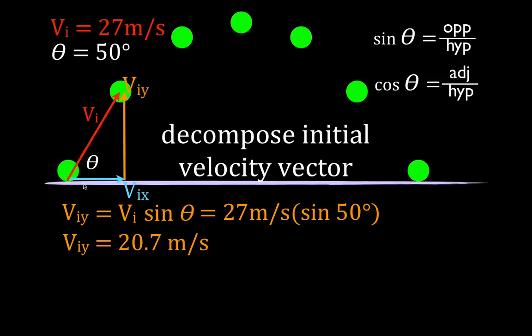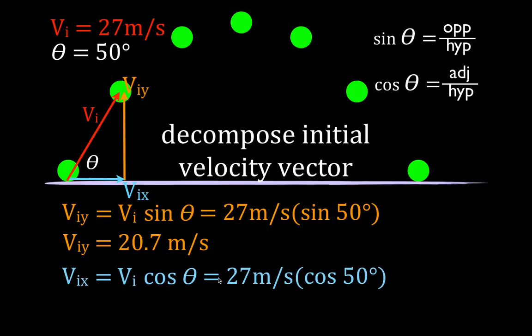Now we're going to find the adjacent side using cosine. We want to find VIx. The initial velocity in the x direction equals the initial velocity times the cosine of the angle — adjacent is always cosine, opposite is sine. That means it's 27 times the cosine of 50, which tells us that the initial velocity in the x direction is 17.4 meters per second. So we broke the initial 27 meters per second down into its components: VIy = 20.7 and VIx = 17.4.